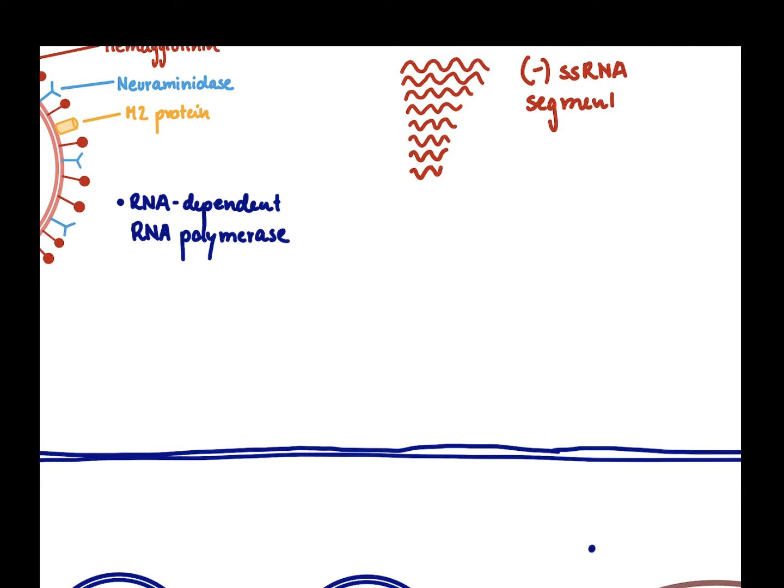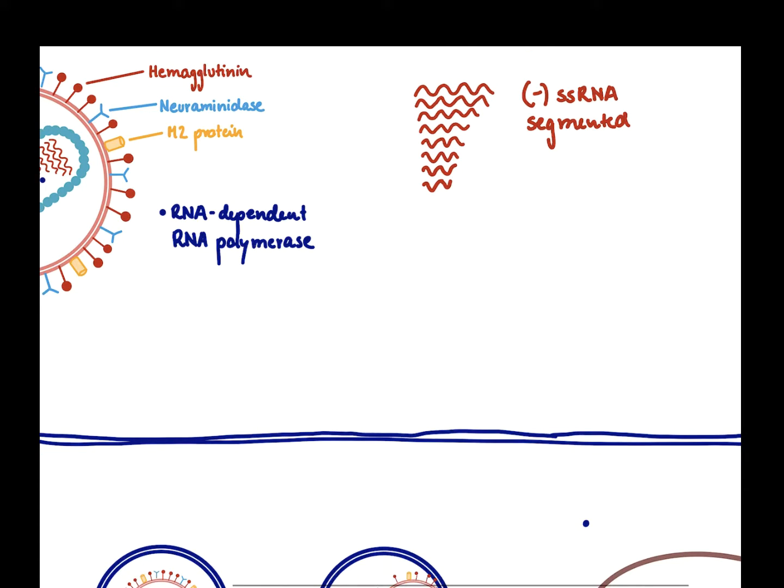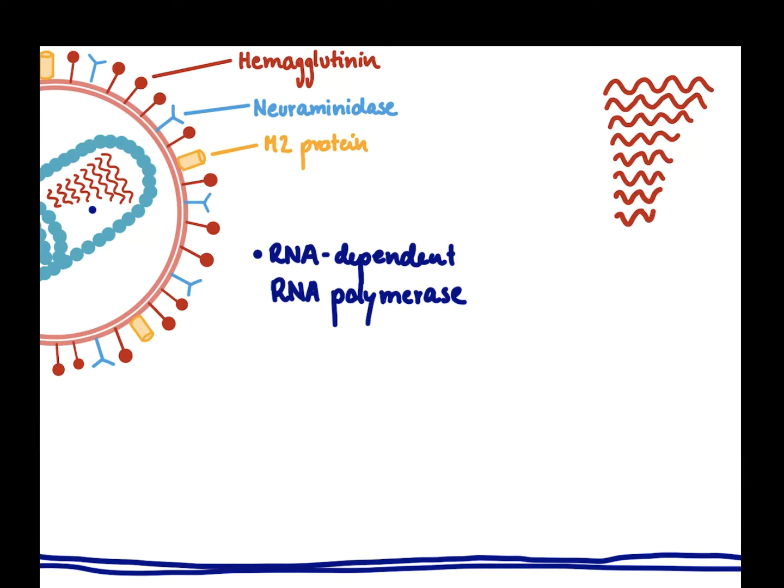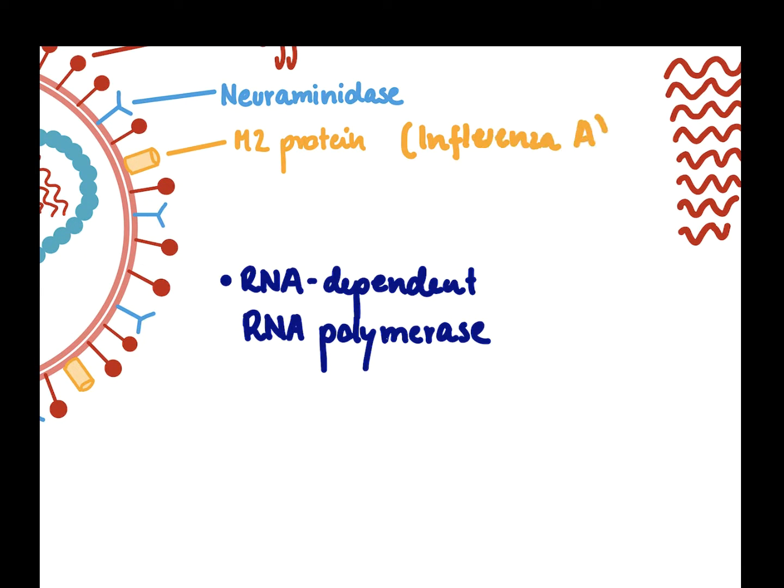It has three important virulence factors: hemagglutinin, the neuraminidase, and then the M2 protein. We have to note that the M2 protein is only found in influenza A, not in influenza B.